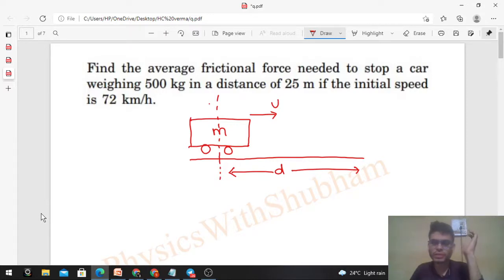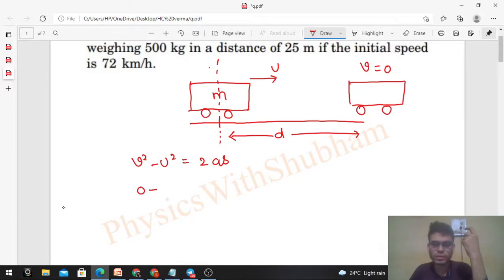u is given. Finally after traveling distance d, your car will stop, so the final speed will be 0. So you can write v² - u² = 2as, this is the equation of motion. Final speed is 0, initial speed given, u², that is equal to 2 × a × s. s will be d.